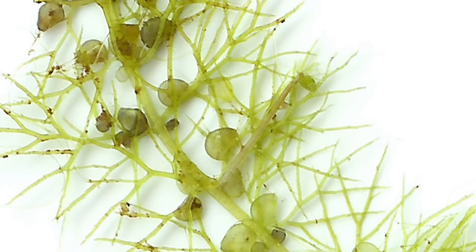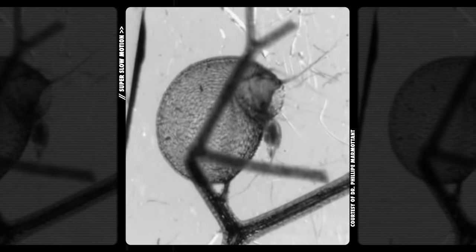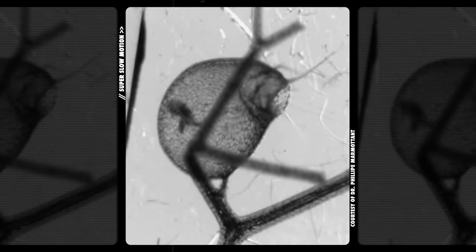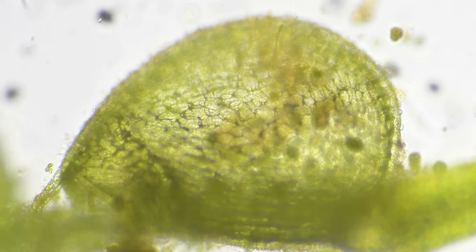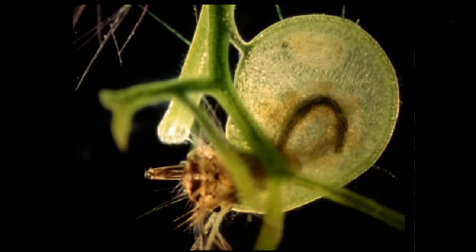The bladder in bladderwort comes from the tiny sacks under the surface that the plant uses to suck in its prey at turbo speeds. Its victims include zooplankton, water fleas, aquatic worms, amoebas, and mosquito larvae, to name a few. Fighting mosquitoes at the source? That's my kind of carnivorous plant.